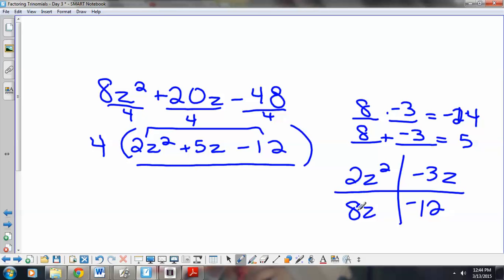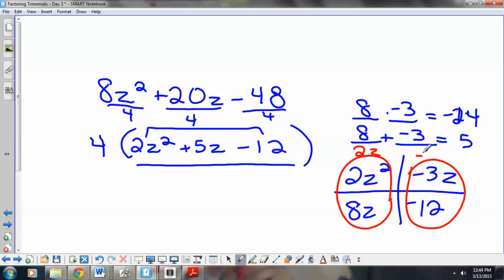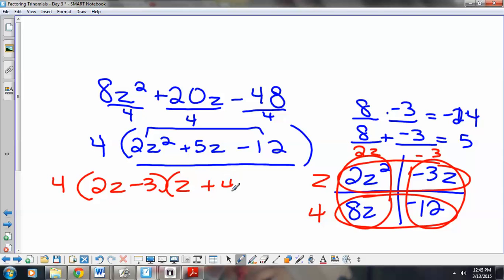So, factor each row and column. First column's greatest common factor is 2z. The second column is negative 3. First row is z. Second row is 4. So, we'll write down our 4. We'll add our factors. 2z minus 3. And, z plus 4.